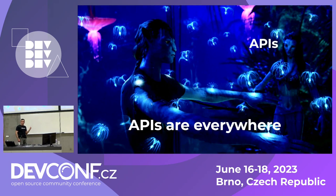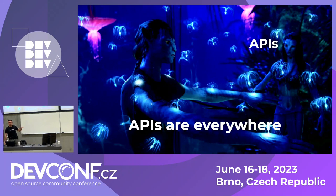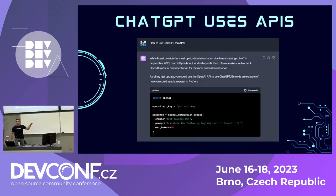APIs — by now we are all familiar with this term because we are living in an increasingly API-centric world. Every service we use today either uses an API or they are APIs. Even ChatGPT uses an API. I asked myself in the chat: does ChatGPT use APIs? Yes. And can we use ChatGPT through an API? Yes.